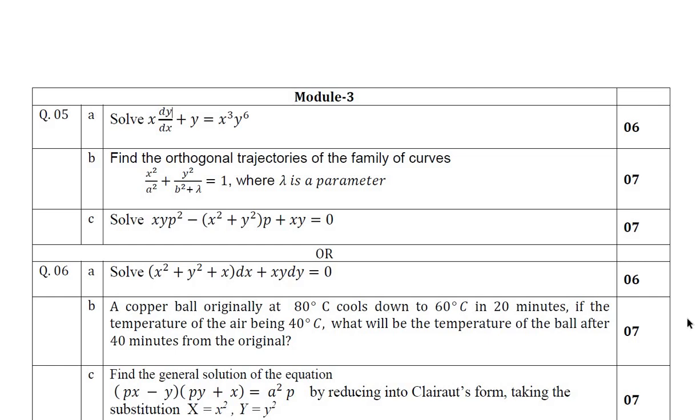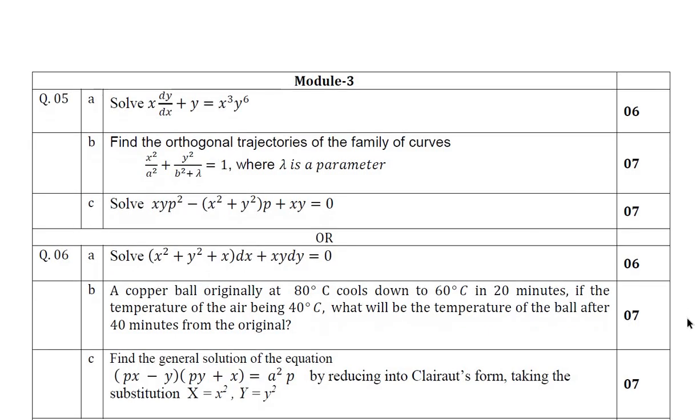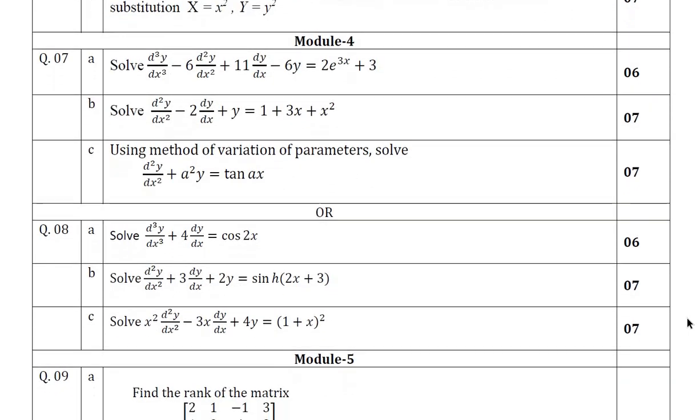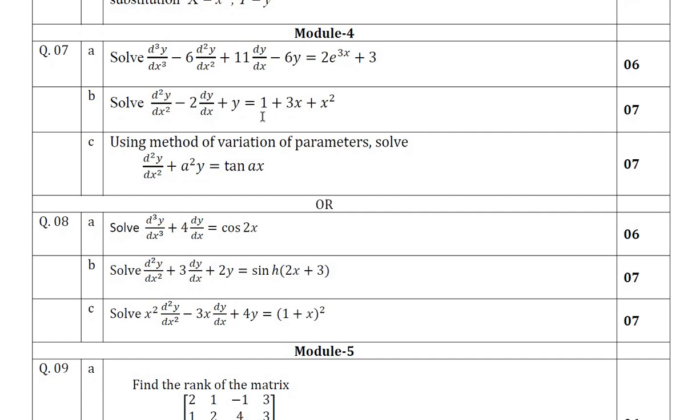Next we shall move on to module 4. Module 4 is of ordinary differential equations of higher order. Module 4 will be containing question number 7 and question number 8. We should answer either 7 or 8. They have given type 1 which is of the form e to the power ax. Type 2 is of the form cos x. Type 3 is of the form polynomial function. Here also compulsory question will be from these 3 types, they are going to provide you one question. Minimum one question will be there definitely.